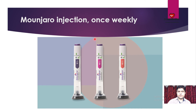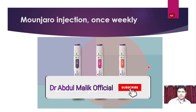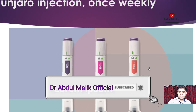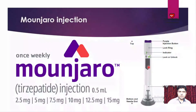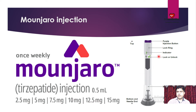The Mounjaro injection is a once-weekly injection available in pen form — for example, in 5 milligram, 10 milligram, and 15 milligram. Mounjaro is the trade name and Tirzepatide is the generic name. Here is the structure of the Mounjaro injection, showing how it will be applied to the patient, and this is given once weekly.